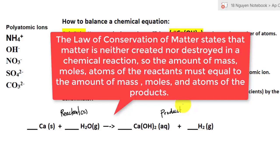Now let's explain that in terms of moles. The number of moles of each element on the reactant side must equal the number of moles of that same element on the product side. And if the moles are the same for each of those elements on both sides, so does the mass, and so does the number of those atoms. That is basically the law of conservation of matter.